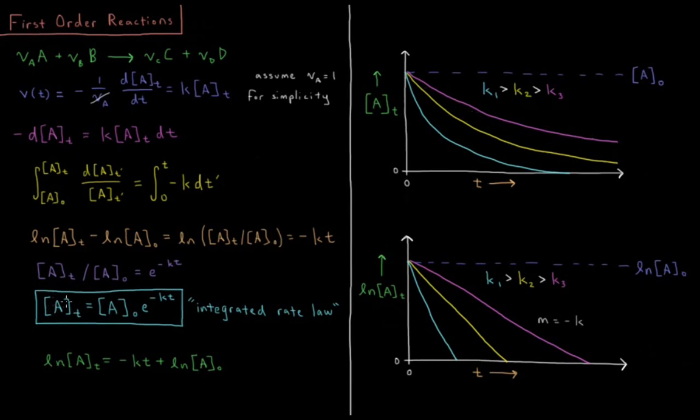We also note from the structure of this equation that from up here, we see that the natural log of A of t equals minus kt plus natural log of A naught. So this gives us a linear equation if we plot natural log of A versus t. It starts off at t equals zero at the natural log of A naught. And then the natural log of the concentration decreases over time. And the slope of this plot is equal to the negative rate constant.